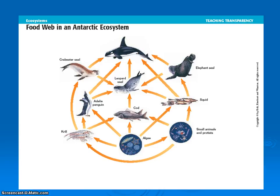Algae is one of the main sources as a producer, but you can also notice that the small protist can branch off and have its own food chain after that. So you're looking at possibly five to six different food chains just based on one food web.